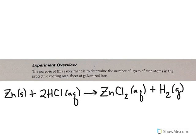By measuring the mass of a piece of galvanized iron before and after its reaction with hydrochloric acid, the mass of zinc that reacted can be calculated. The mass of zinc can be related, in turn, to the number of layers of zinc atoms in the zinc coating by considering the density of the metal, the surface area of the galvanized iron, and the size of the zinc atom.